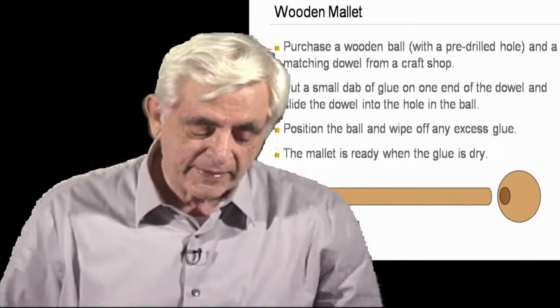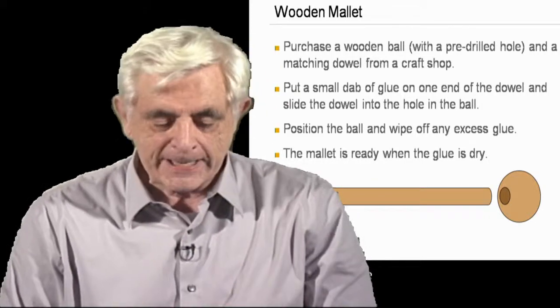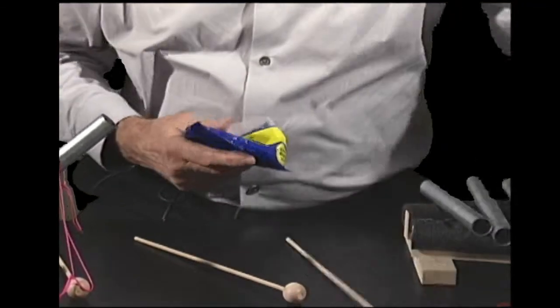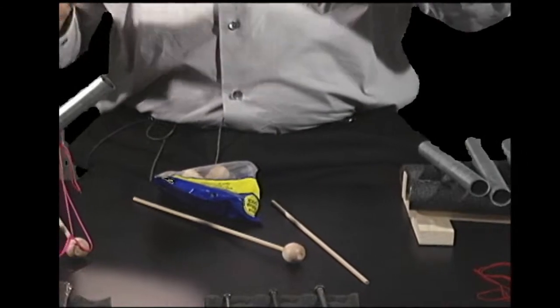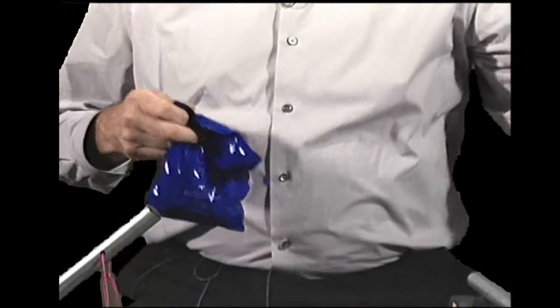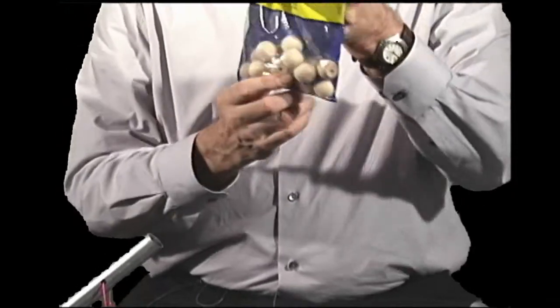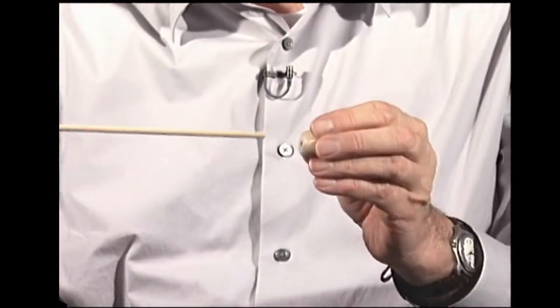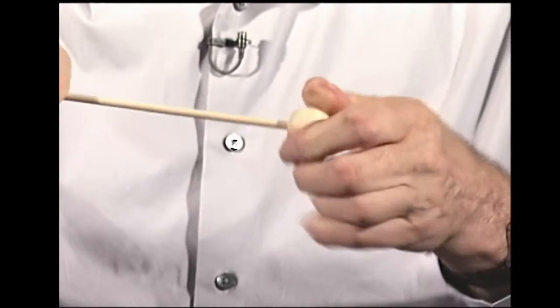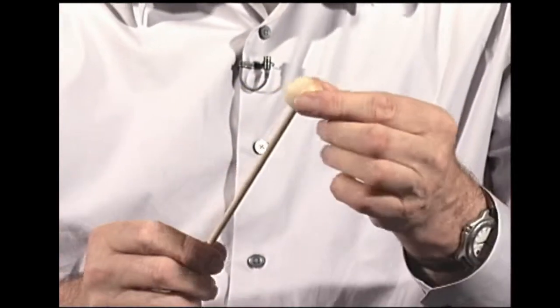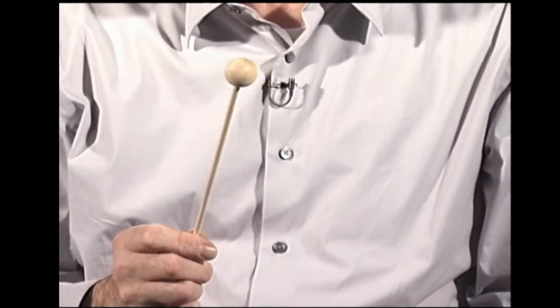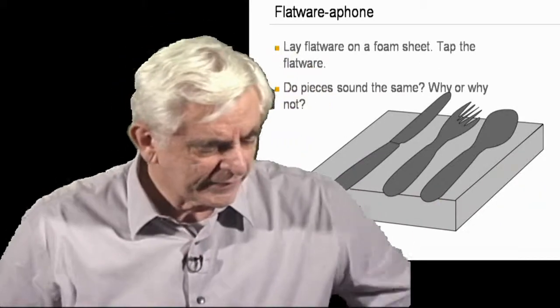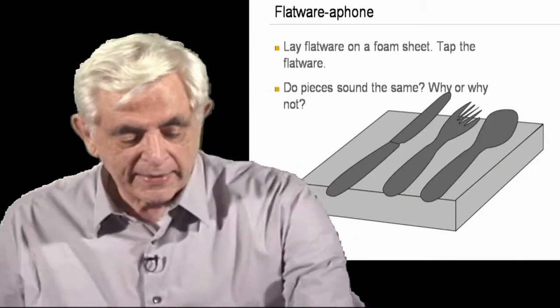You might be wondering where do you get these mallets. A mallet is an easy thing to make. You can buy them of course, but it's easy to make. What you do is go to your local craft store and they have bags of balls that have already been pre-drilled, which you have to match up the size. I've got one from the bag with a hole drilled into it. I stick the dowel in there and jam it in. I've got a mallet. However, it's best if you put a small drop of glue in there to make sure it stays. This is quite inexpensive and every student can make their own mallet.